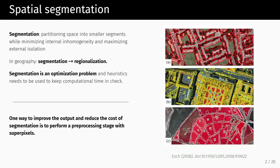The first part of the story is maybe the part that all of you know quite well. We have some spatial data like satellite images and so on, and we want to get some knowledge from it. To do that, we need to generalize somehow, and one way to do that is to use spatial segmentation.